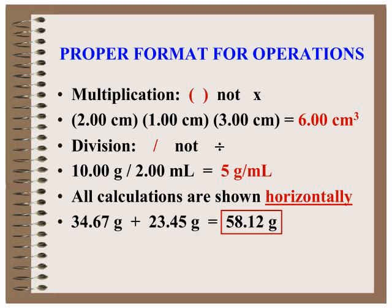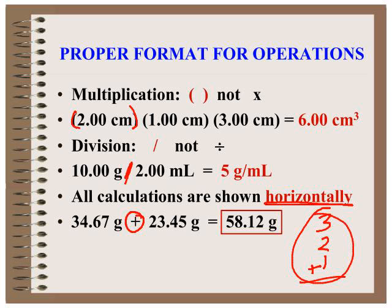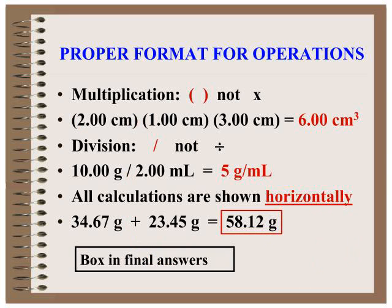So again, multiplication shows those parentheses. Division, you draw a line. You need to show all your series of additions with a horizontal calculation. I don't want to see 3 plus 2 plus 1, because we're not doing any arithmetic. Your calculator is going to give you the answer. So 3 plus 2 plus 1, and then put your answer in with the correct unit. The last thing you want to do, once you're finished with your calculation, is to box in that final answer. That draws the attention to your final answer.